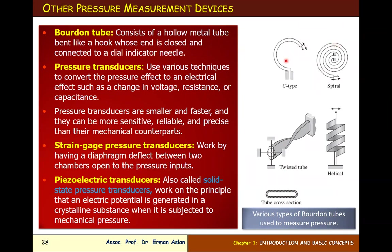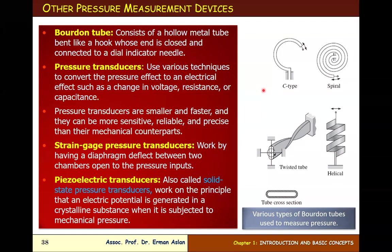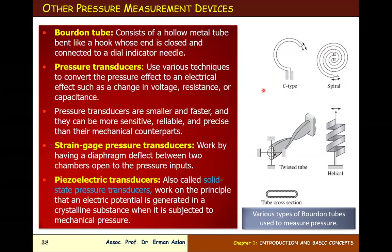Electrical pressure transducers use various techniques to convert the pressure effect to an electrical effect, such as changing voltage, resistance, or capacitance. Pressure transducers are smaller and faster, and can be more sensitive, reliable, and precise than their mechanical counterparts.